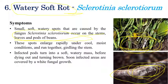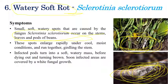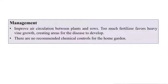In later stages, infected parts turn into soft watery masses — similar to what happens if beans are kept in a refrigerator for 20–30 days; watery soft discolorations can be observed. When it comes to pods, white color fungal growth can be observed. For management: improve air circulation between plants and rows, and chemical control can also be recommended for home gardens.